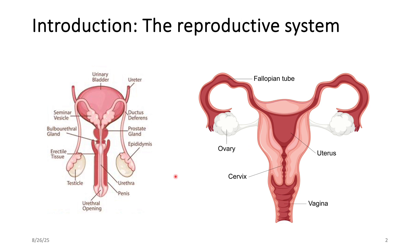Within the gonads, you have what we call gametes. The spermatozoa is a gamete and the oocyte is also a gamete. You should be able to differentiate between what the gonad is, what gametes are, and what external genitalia is. The testis is the gonad; within the gonad you have gametes, for example the spermatozoa. Within the ovaries, you have gametes known as the oocytes.